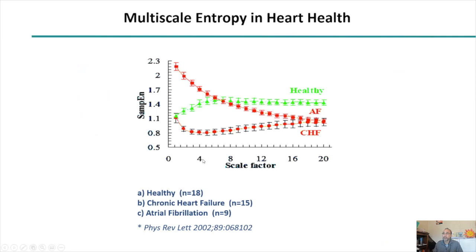What you get is a graph such as this — an example taken from Physical Reviews Letters in 2002. You have healthy individuals represented by the green graph, atrial fibrillation in another graph, and congestive heart failure in the circle graph. Atrial fibrillation individuals tend to have a lot of irregularity in the high frequencies, but as you go out into the lower frequencies, you start losing that irregularity.